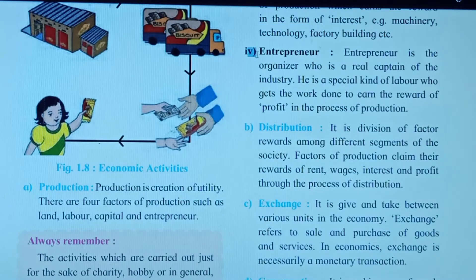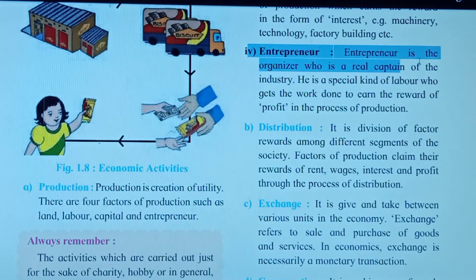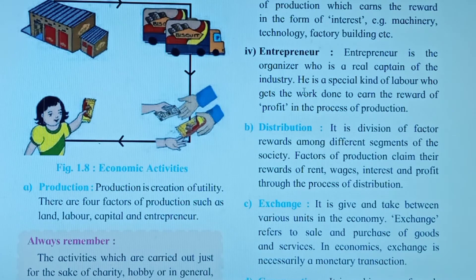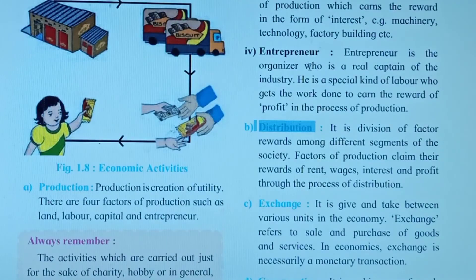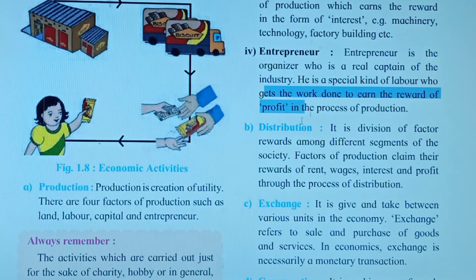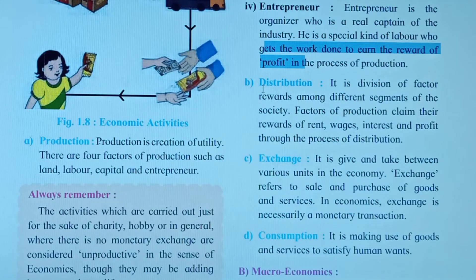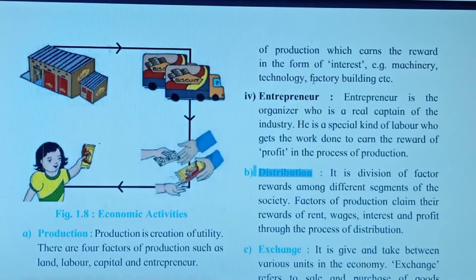The fourth factor of production is the entrepreneur. The entrepreneur is the organizer — the businessman who is the captain of the industry. He is a special kind of labor who gets the work done from workers and laborers to earn the reward of profit. To earn profit in the process of production, the entrepreneur must work harder and manage the workforce effectively. The reward an entrepreneur gets is profit.